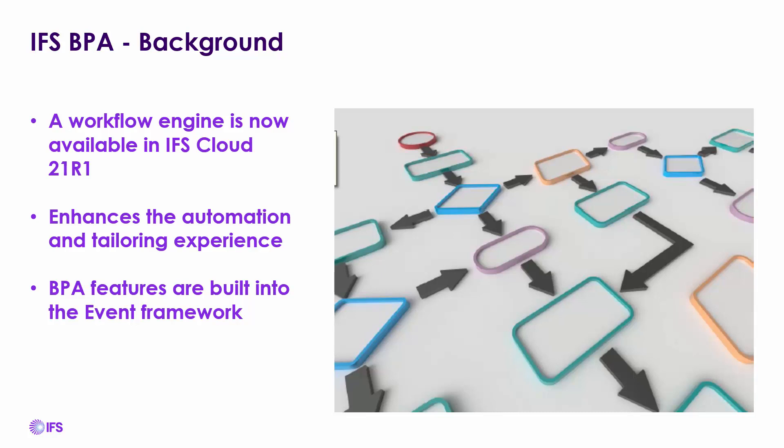With the business process automation features being built into the event framework and the REST API framework, we can leverage our current functionality but also enhance it. An example is triggering an event linked to a business process automation, which triggers different automations such as calling a projection within IFS, or even triggering the user to enter additional information based on the transaction they're performing within the system.